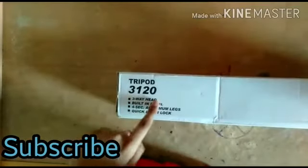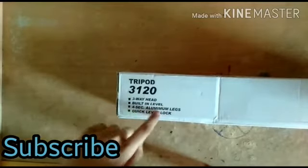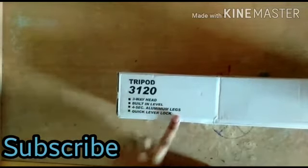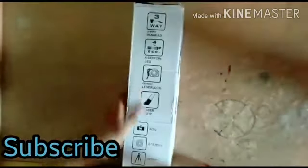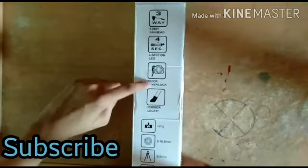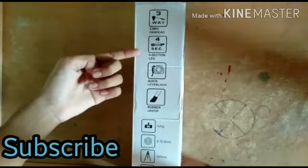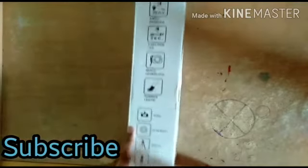So this is three-way head, built-in level, four-section element here, legs, quick level lock, and we have here just other tools. We have quick level lock, king wave, man huddle, four legs, and double deep leg.